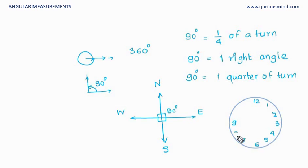Now if you see, 12 o'clock and 3 o'clock make a 90-degree angle.